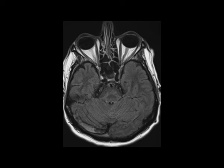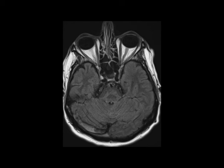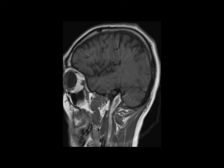As we can see on the left, the normal appearance of the dural venous sinuses is hypointense on the T2-weighted sequence due to the presence of venous flow.